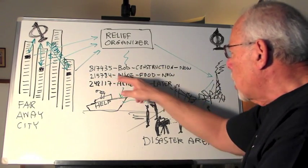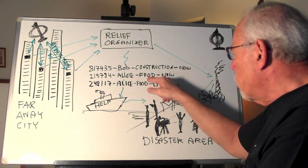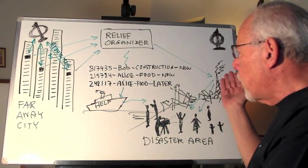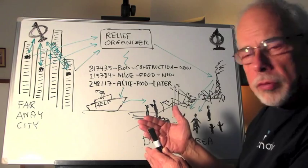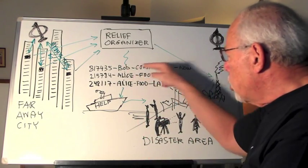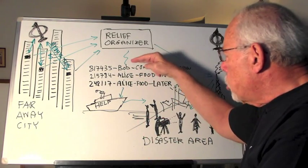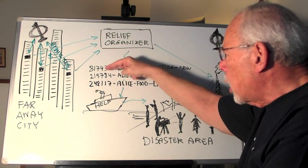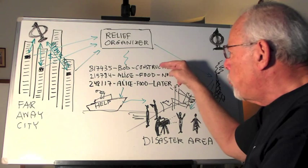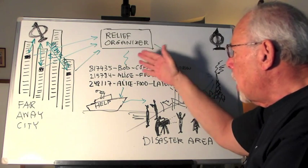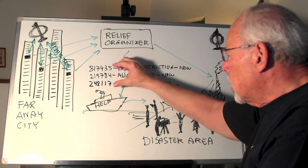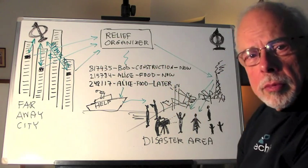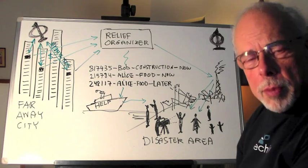Another claim check is just for Alice, for food now. A third one: Alice, food later — a month from now, if you want to stagger the relief. Those terms that determine the disposition and redemption of the claim check are cryptographically fused. Nobody can undo the connection between the money and its disposition. Relief is much more effective.